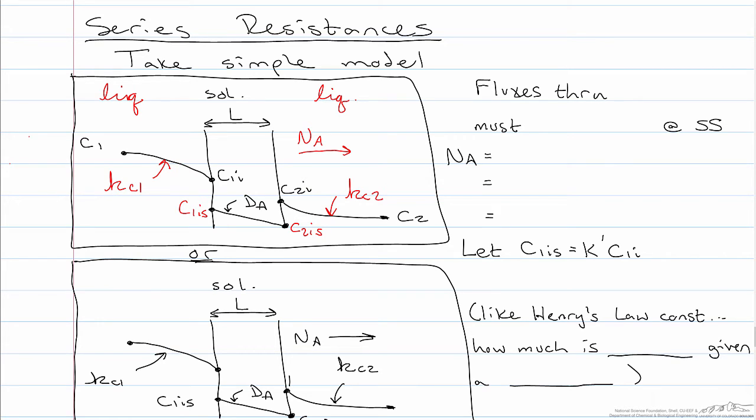Now let's look at the fluxes. So the fluxes through all of the layers must be the same at steady state. They must be equal at steady state. So we can write the flux in each zone: on the feed side here, in the membrane here, and then in the permeate side here. All of those fluxes must be equal.